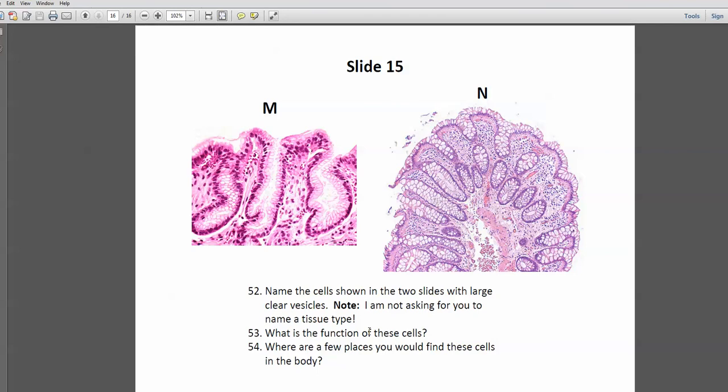Okay, and I do believe this is the last slide. And here you were just asked to identify the cells, and these of course are goblet cells. Goblet cells look like they are empty, but what you're looking at here are the large vesicles the goblet cells contain, which contain mucus. Goblet cells secrete mucus. So that's what you're looking at here.